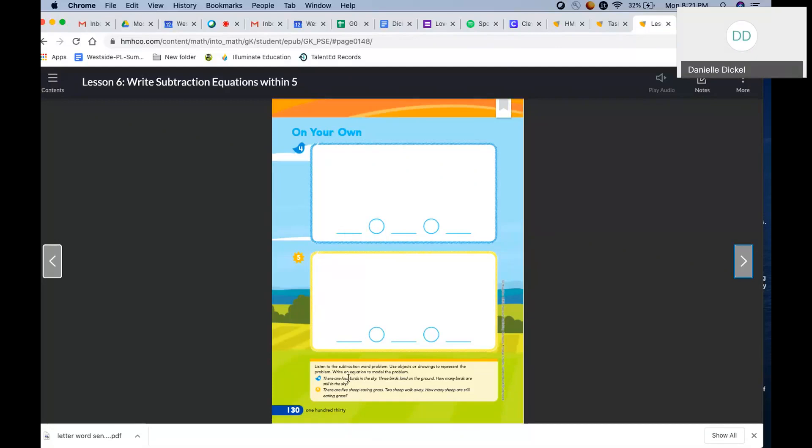Let's look at the next problem. There are five sheep eating grass. Remember, you can pause to draw your picture or you can just draw circles or X's. Probably circles because we are going to cross them out. There are five sheep eating grass. One, two, three, four, five. Two sheep walk away. So we are going to cross out two. Five minus two equals how many sheep are still eating grass? Three. Three sheep are still eating grass. Five minus two equals three.